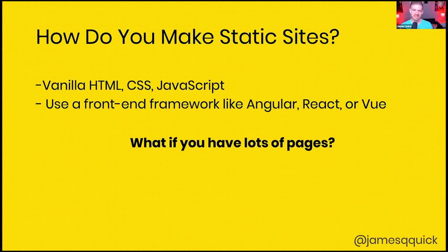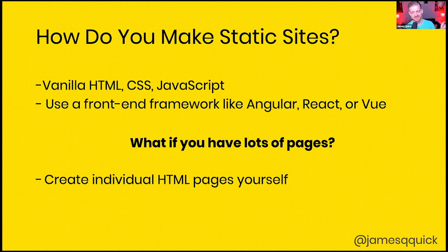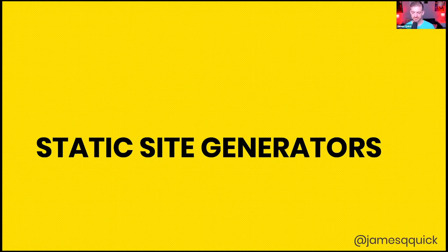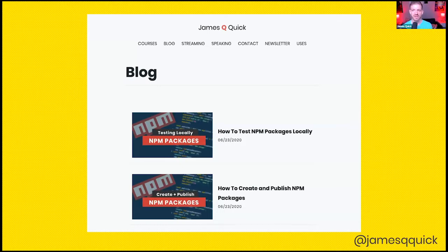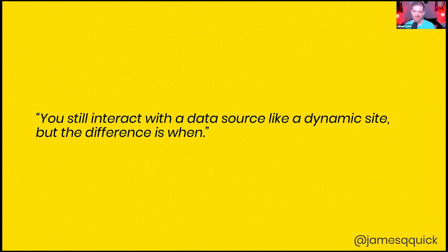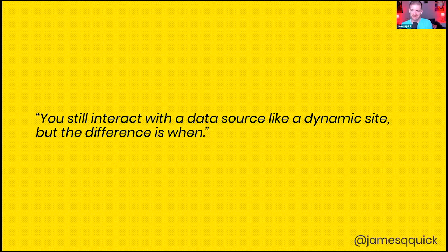What if you have lots of pages — like a big blog with hundreds of posts? You could create individual HTML pages yourself, but you probably won't. Your alternative, especially in the modern web, is to use a static site generator. With a static site generator, you have some data source for your blog posts. At build time, it grabs the information for each post and generates a static page for each one. You still interact with a data source, just like a dynamic site would — the difference is when that interaction happens.